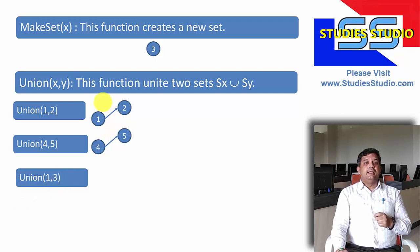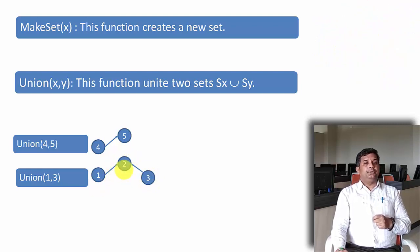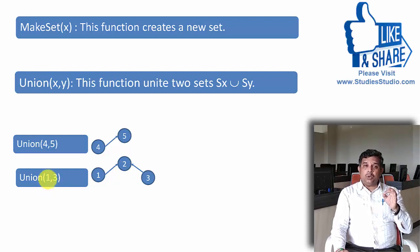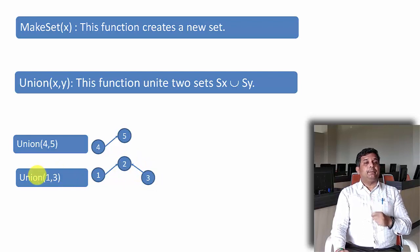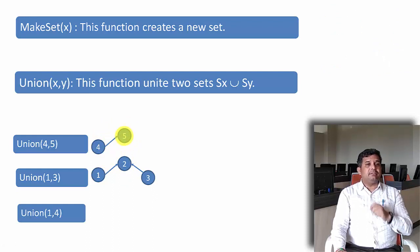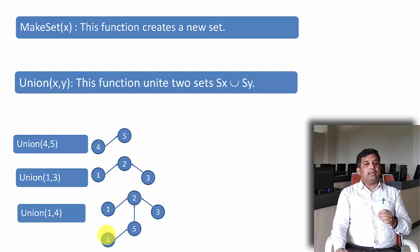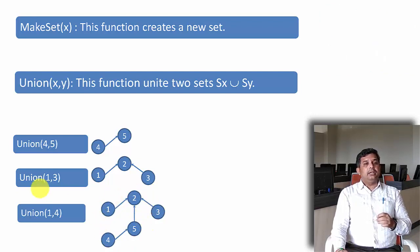The next is union of 1 and 3. Now 1 is in the set whose representative is 2, and 3 is a set with a single element. When doing union, I will be adding 3 to the representative of 1, which is 2. One is not the representative, so for 1 I have to find the representative, which is 2. Now union of 1 and 4: 1 belongs to the set whose representative is 2, and 4 belongs to the set whose representative is 5. When doing union, the representative of 4's set is attached to the representative of 1's set. This is how the union can be formed.